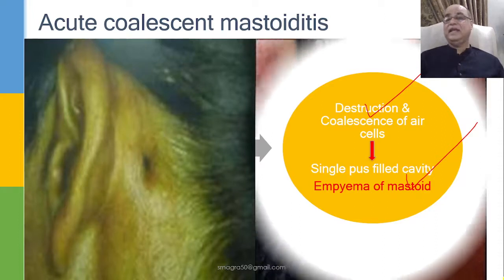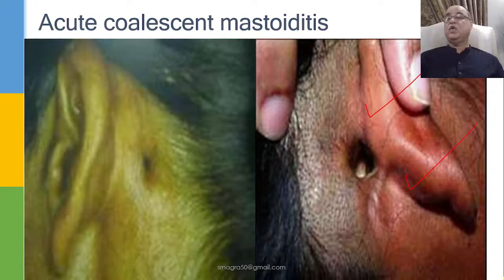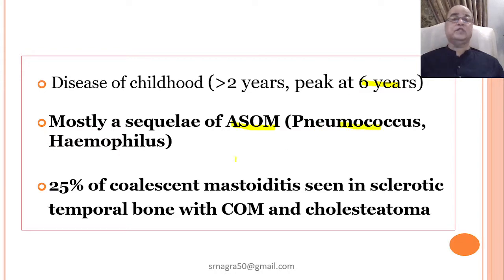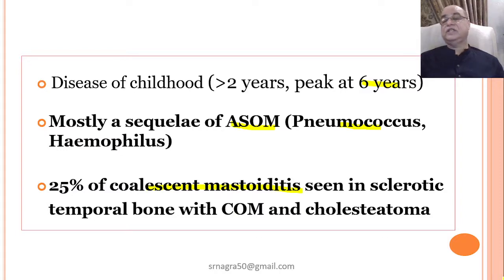If untreated, even the overlying skin can give way, leading to a mastoid fistula. This is a disease of childhood with a peak age of around 6 years. It is usually a sequela of acute suppurative otitis media. Causative organisms include Streptococcus pneumoniae, Haemophilus influenzae, or pneumococcus. However, 25% of coalescent mastoiditis cases are seen in sclerotic temporal bone with chronic otitis media with cholesteatoma.